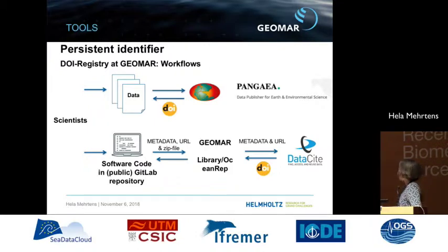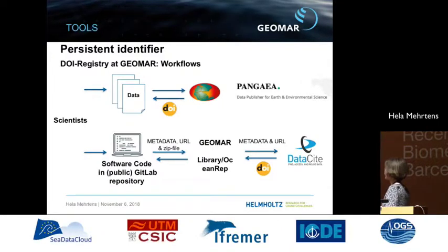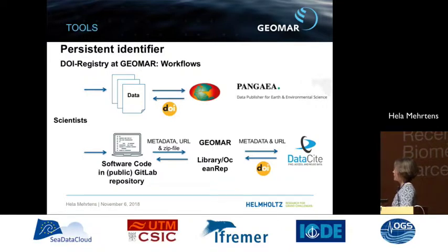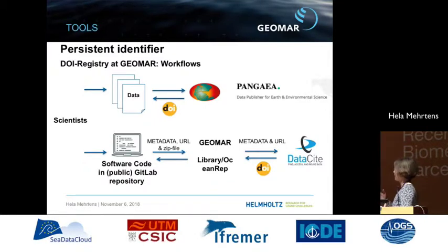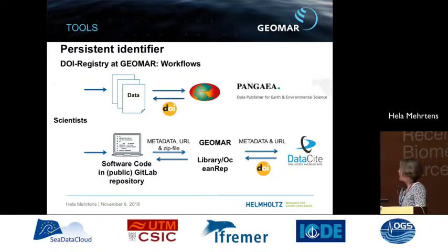When the data reach a final stage of the project or workflow, we deliver them to international repositories. We use PANGAEA, where datasets receive a digital object identifier to be permanently addressed and citable. Software code is moved from GitLab to open GitLab pages, and metadata is described at the GEOMAR institutional repository OceanREP, where it receives a DOI from DataCite to be referenced and reused.